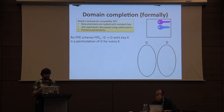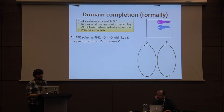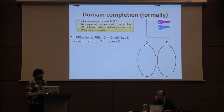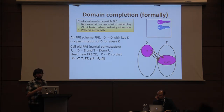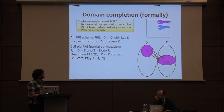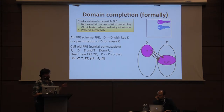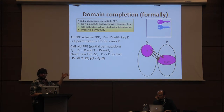A domain completion setting involves FPE. An FPE from a set D to itself with key K is a permutation of that set for every key. In domain completion, we call the old FPE and consider a partial permutation — that is, a permutation defined only on a subset of its possible inputs — called F_K*. The domain of this partial permutation is T, representing the plaintexts present in the system before domain completion occurs.